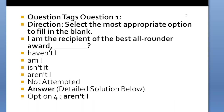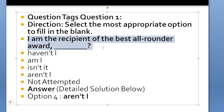I am not going to put only the questions with answers, but also options with answers and detailed information explaining why a particular option is correct. The first question is: 'I'm the recipient of the best all-rounder award ___.' The options are: haven't I, am I, isn't it, aren't I. The correct option is 'aren't I.'